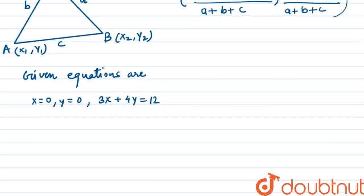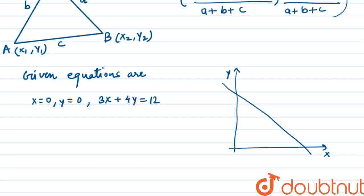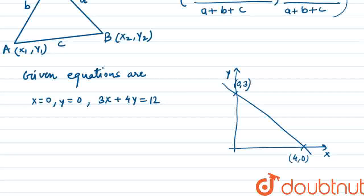Now let's plot these lines. Let's say this is the x-axis and this is the y-axis. Our line will have the point (4, 0) here and (0, 3) here. The origin (0, 0) is labeled A, (4, 0) is labeled B, and (0, 3) is labeled C.